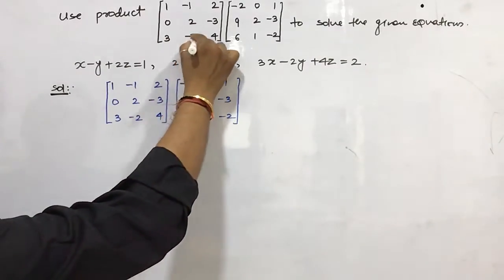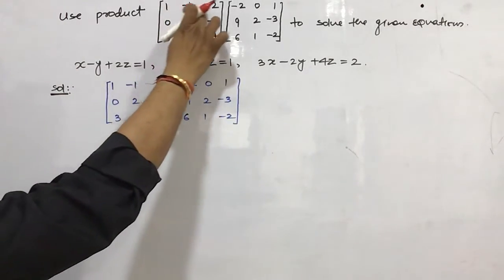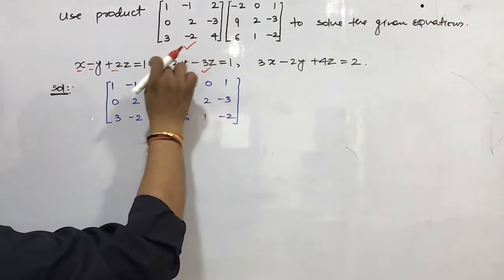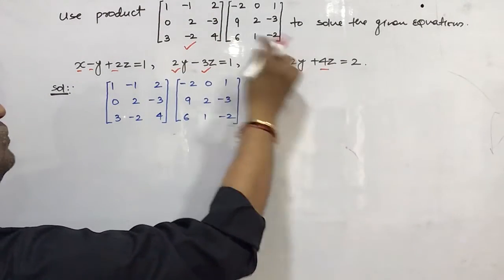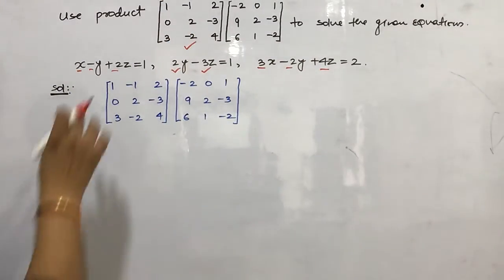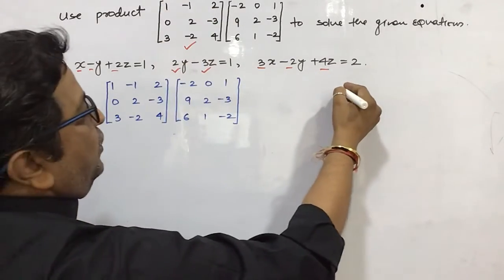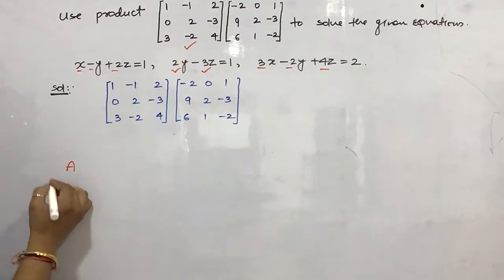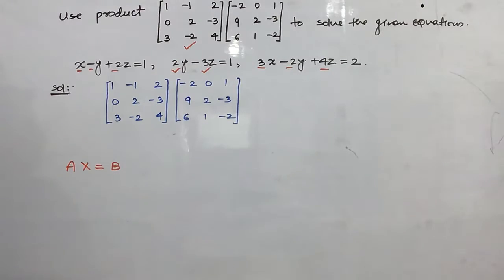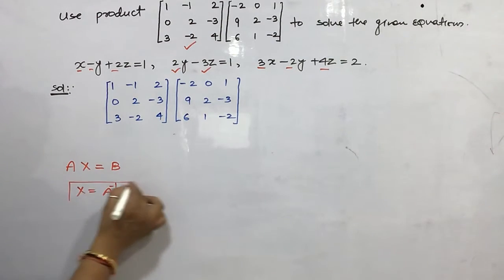This matrix is made by the coefficients of x, y, z of the given equations: 1, -1, 2 and 2, 3, and 0, 2, -3. This is matrix A. The variable matrix x, y, z is represented by X, and the constants are represented by B. Everyone knows that X equals A inverse times B.